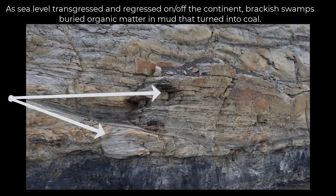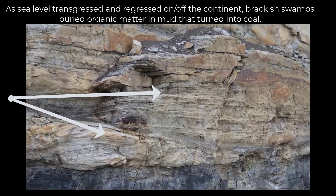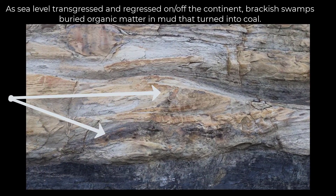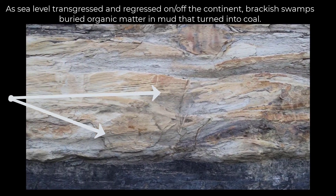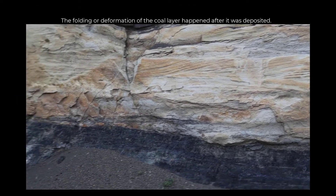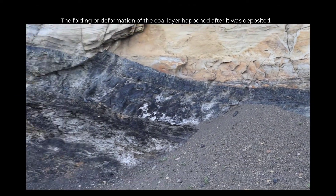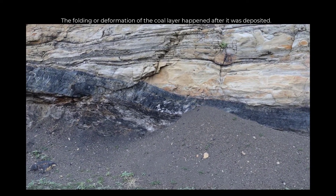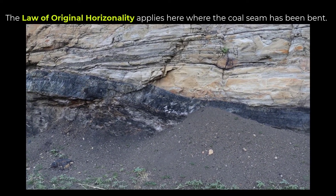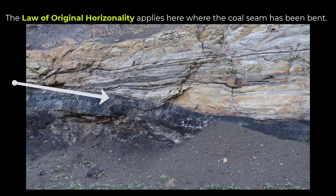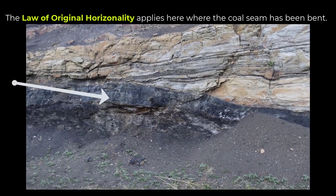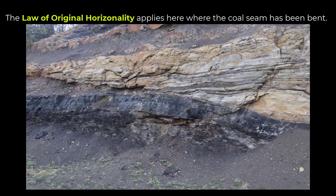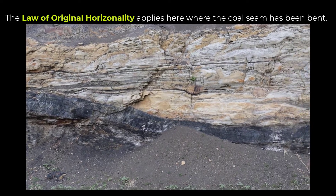Some of the beds don't have a very significant tilt, others do, so these could be inland sand dunes or some could be fluvial. Notice that the coal seam — that black layer — you can actually see that it's folded, and that happened after these rock layers were laid down. The law of original horizontality states that rocks are laid down flat and later folded because of pressure, becoming more pliable.